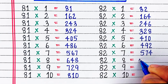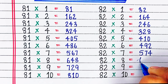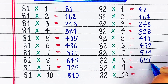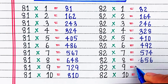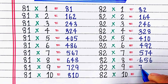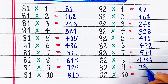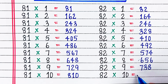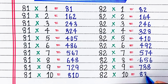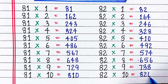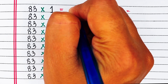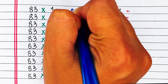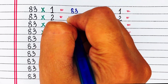82 6s are 492, 82 7s are 574, 82 8s are 656, 82 9s are 738, 82 10s are 820.